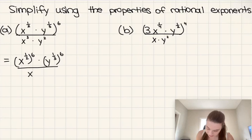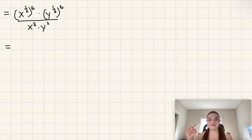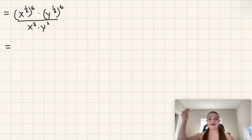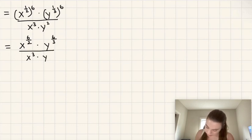That's my very first step. I'll keep the denominator the same for now. Next, we have a power to a power — x to the one-half raised to the six, and y to the one-third raised to the six. When we have a power to a power, we multiply those powers. So we get x to the power of six over two, times y to the power of six over three, over x cubed y squared.